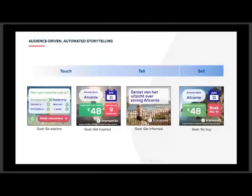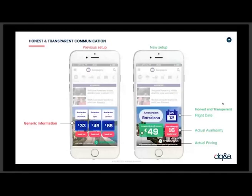On top of the different communication types, we made a big step in how to communicate. No longer generic info and communication prices — instead, real messages like: 'You looked for a flight from Amsterdam to Barcelona on the 12th of June. There are 16 seats left for the price of 49 euros.' This data takes price yielding into account. Transavia required 99.9% accuracy, achieved by refreshing the pricing and availability data every five minutes.